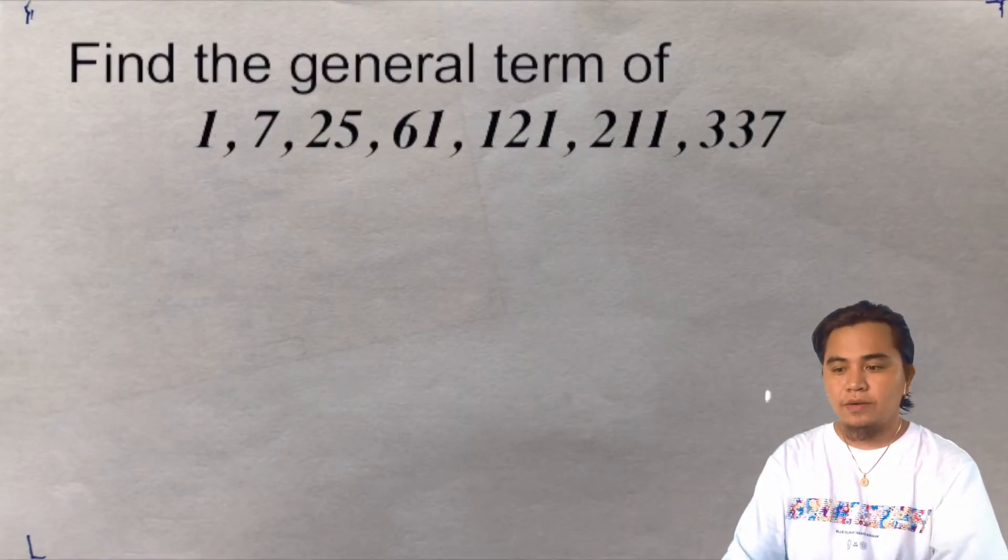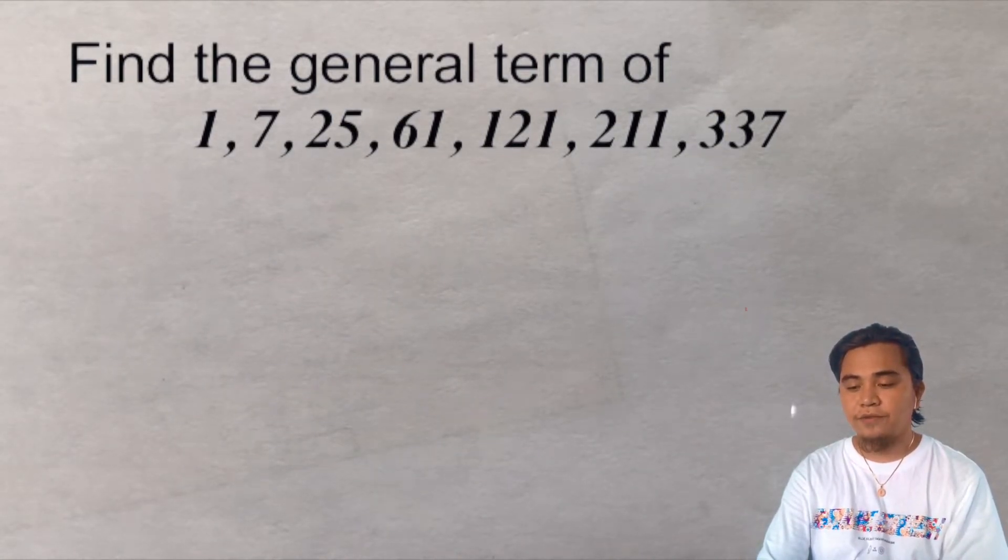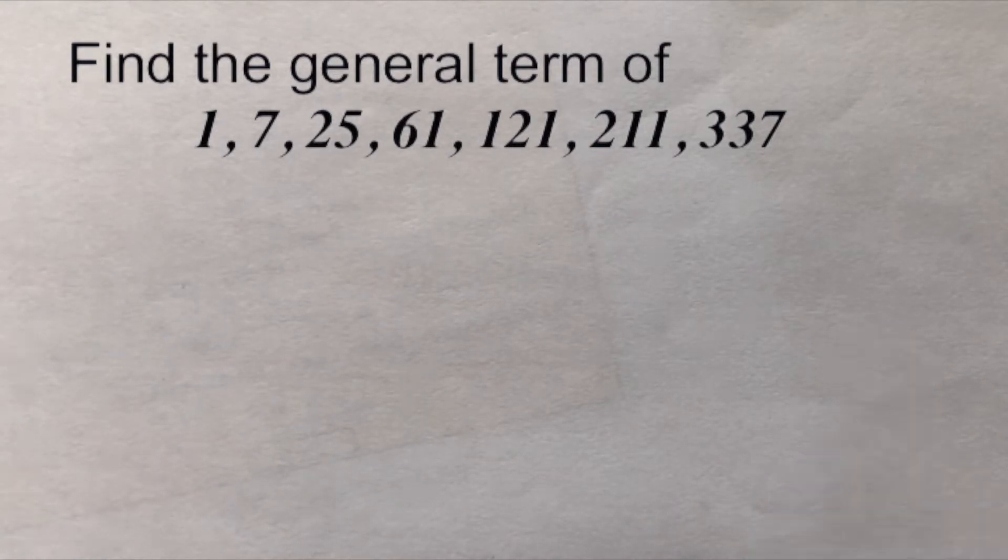Let's have a third-degree sequence or cubic. Find the general term of 1, 7, 25, 61, 121, 211, and 337.